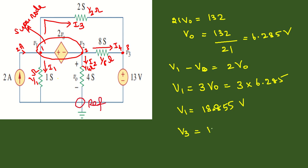V3 is already available in the problem itself—it is 13 volts. So we got all three answers: V0 or V2 is 6.285 volts. Thank you.